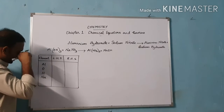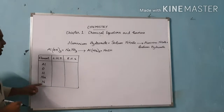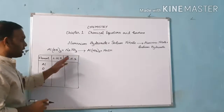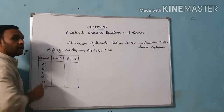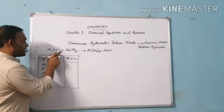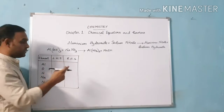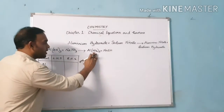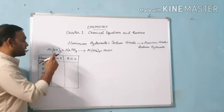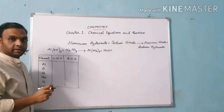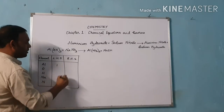The elements present in this equation are aluminium, oxygen, hydrogen, sodium, and nitrogen. Students may have a doubt whether the bracket is considered as a single one — no, in chemistry we call it a parenthesis. Inside the parenthesis here we have two elements, oxygen and hydrogen. If any number is outside the parenthesis, that number is applicable for both the elements present inside the parenthesis.